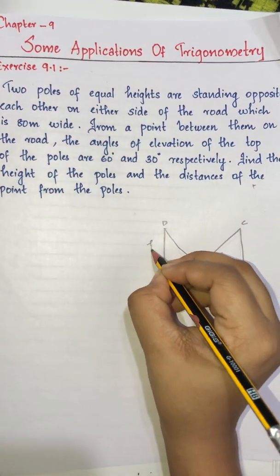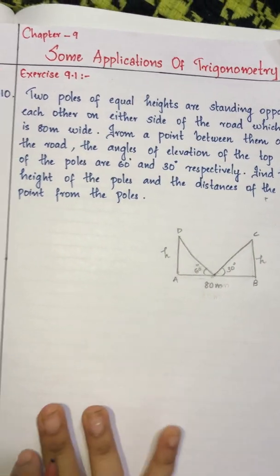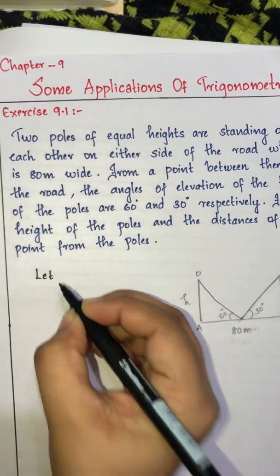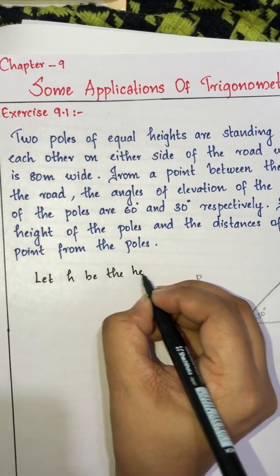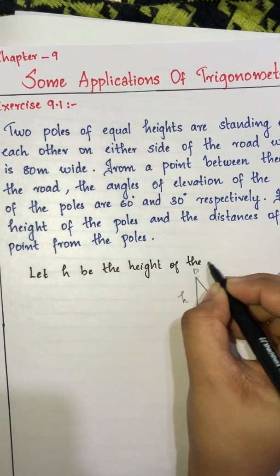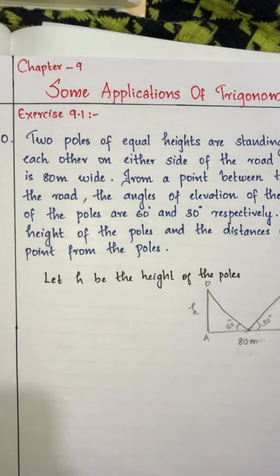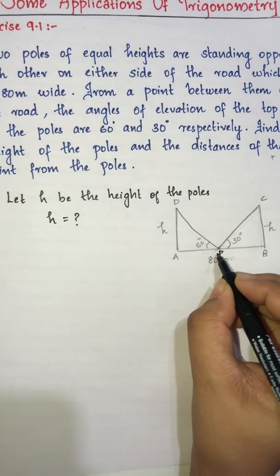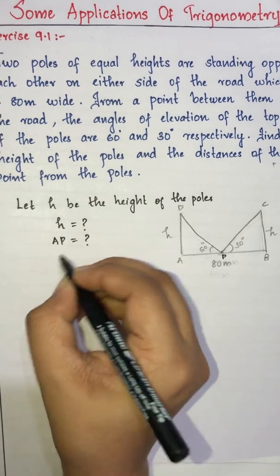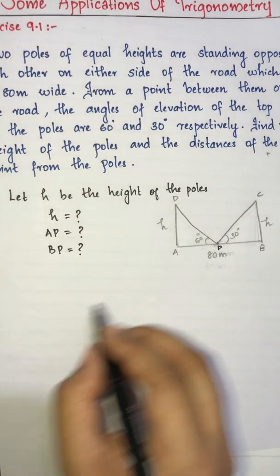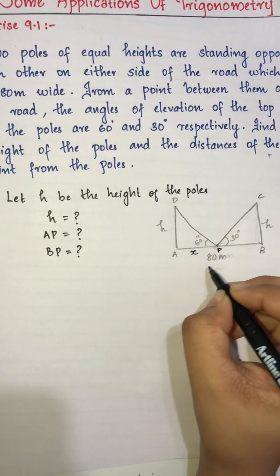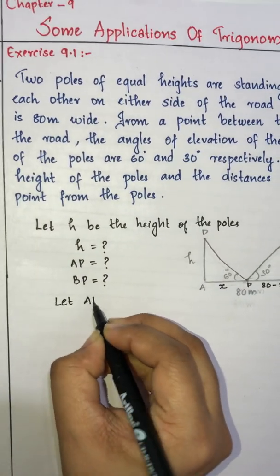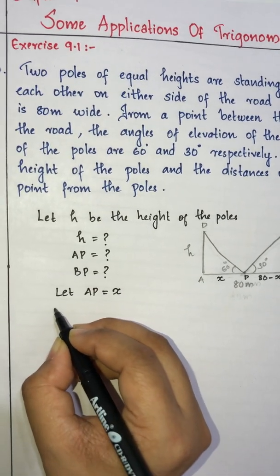Let h be the height of the poles. We name the figure as A, B, C, D. Let AP be equal to x, then BP is equal to 80 minus x.